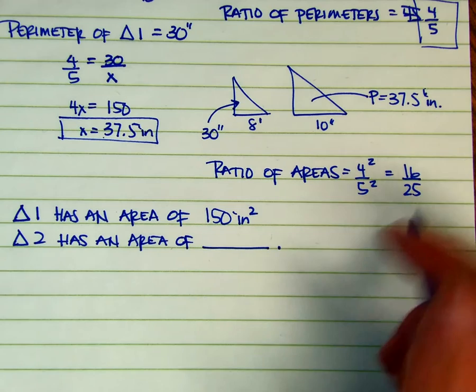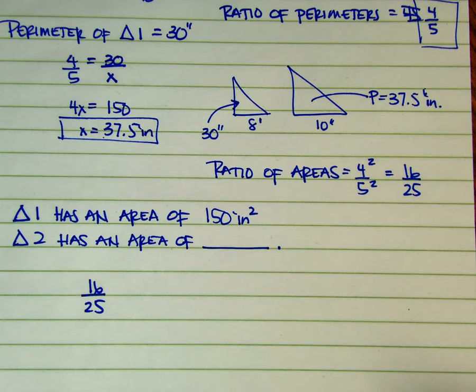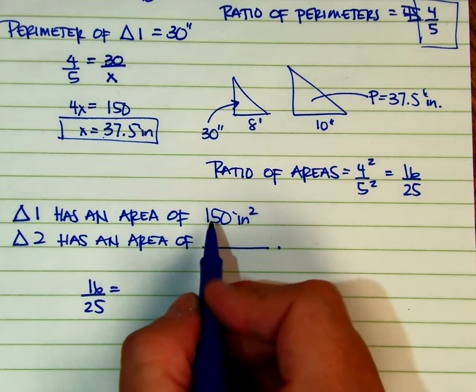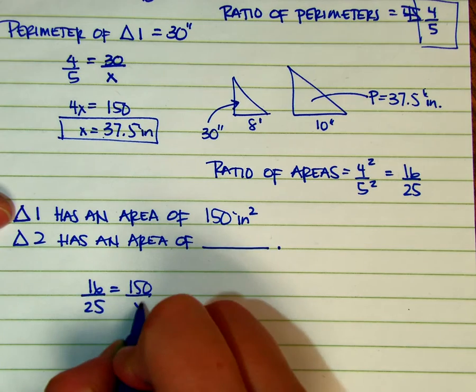So using this idea, I know that the areas have to be in a ratio of 16 over 25, and the area of the small one or the first one is 150, so that leaves x.